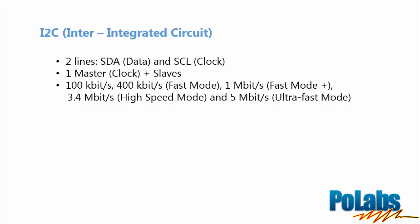I2C bus supports different speed modes but the most common is 100 kilobits per second. Other supported speeds are fast mode 400 kilobits per second, fast mode plus 1 megabit per second, high speed mode 3.4 megabits per second, and ultra fast mode 5 megabits per second.